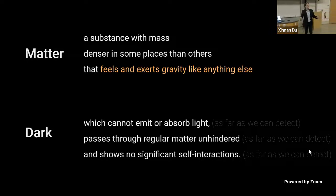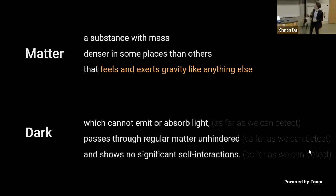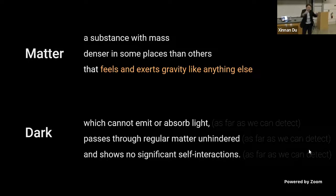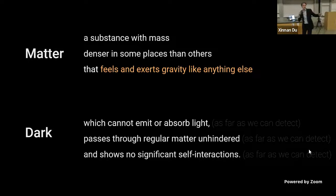In the first part I'll tell you a little about what dark matter is and why we might think it is a new particle, and then in the second part we're going to roll up our sleeves and try to find it. What is dark matter? It is a kind of matter — it is some kind of stuff, it has a mass, and it can be more in some places than in others. It exerts gravity like anything else in the universe, just like you or I or the planets and the stars. However, it is also dark.